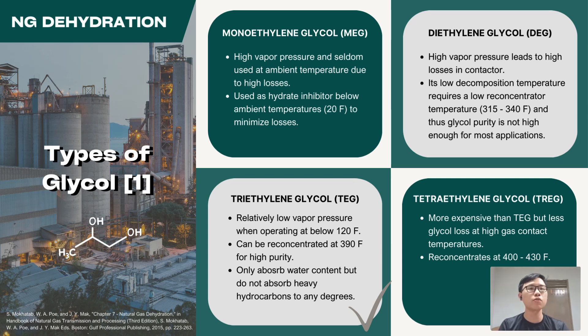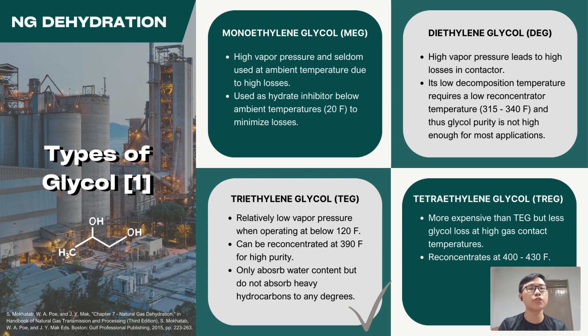TEG is the most commonly used desiccant in natural gas dehydration, as it has a relatively lower vapour pressure compared to MEG and DEG, hence promoting minimal loss due to evaporation.